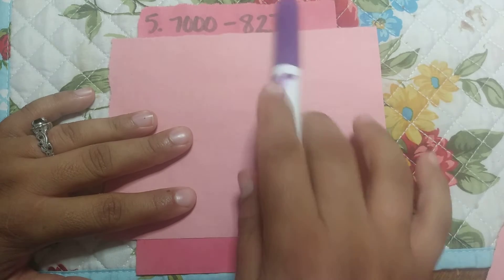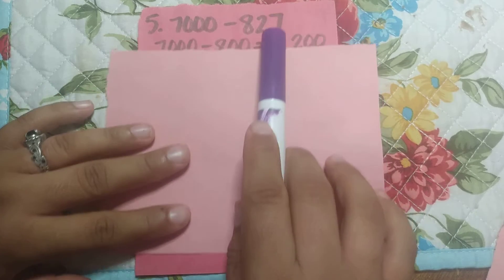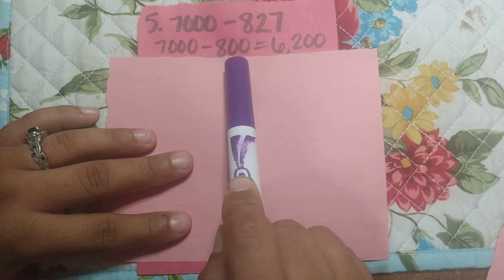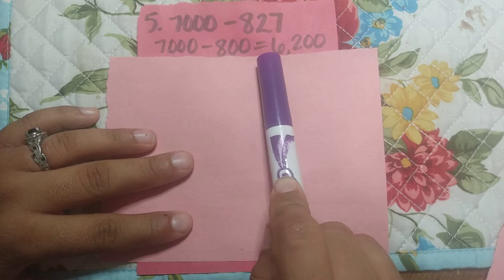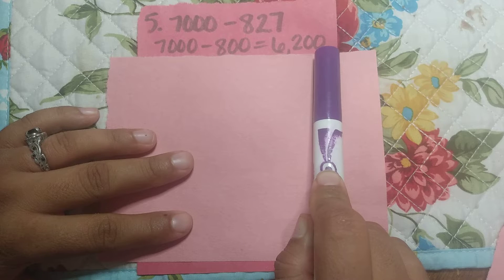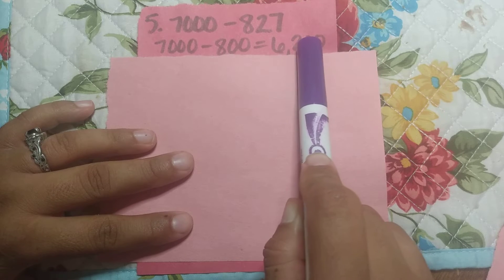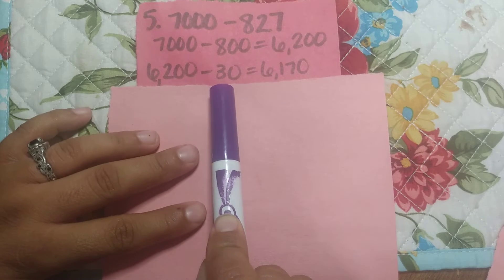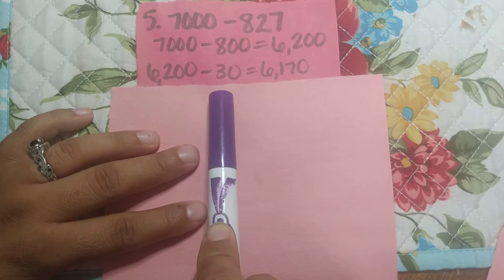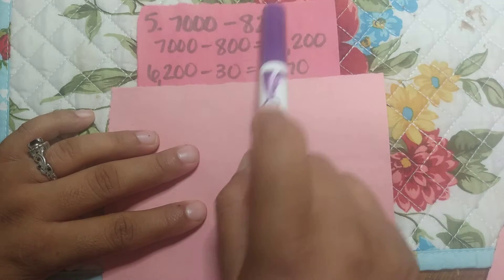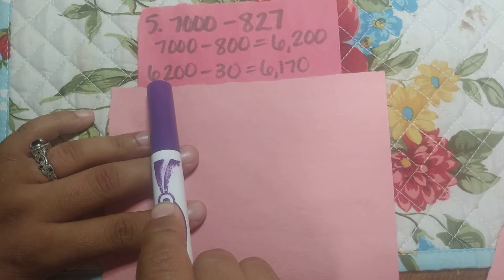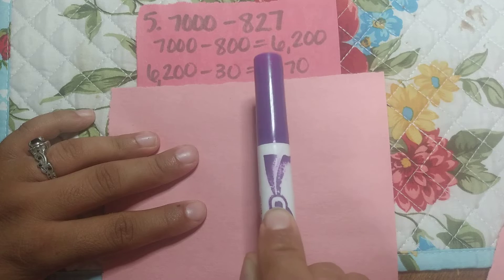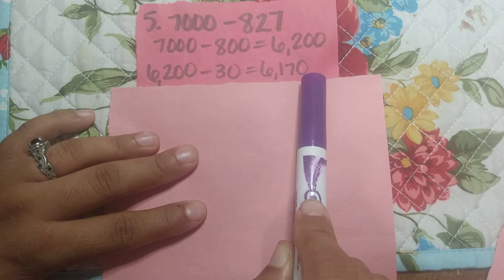They want you to leave the 27 alone for the moment. You're going to take 7,000 minus 800 equals 6,200. Then you're going to take that and subtract 30, because we've got to have a quick, even number. So we're going to take that 30 and subtract it from 6,200 and come to 6,170.